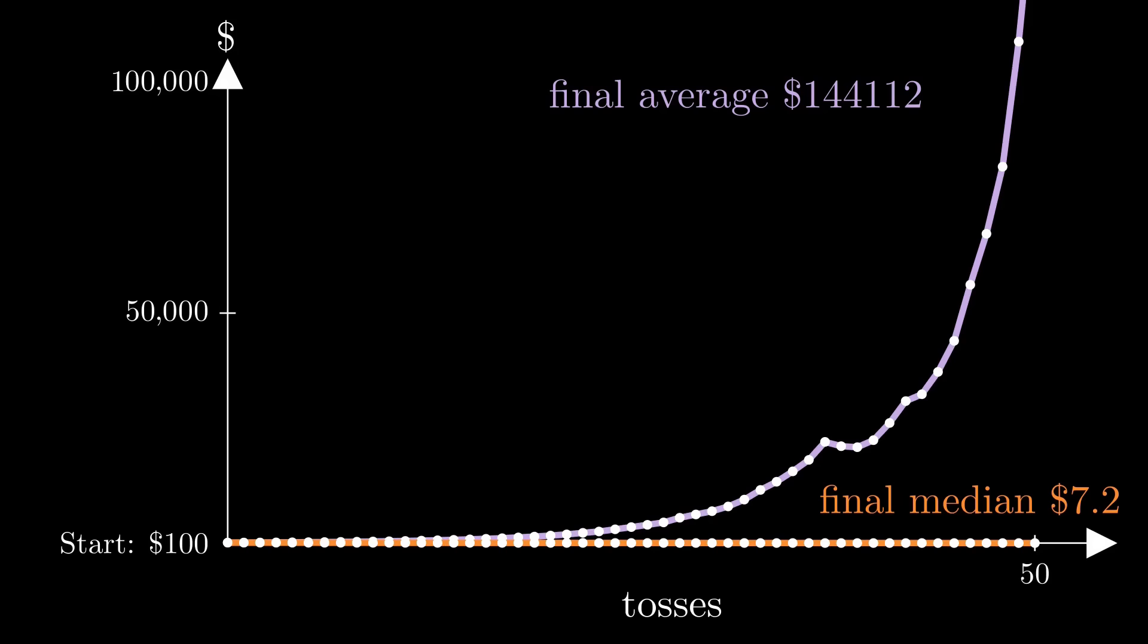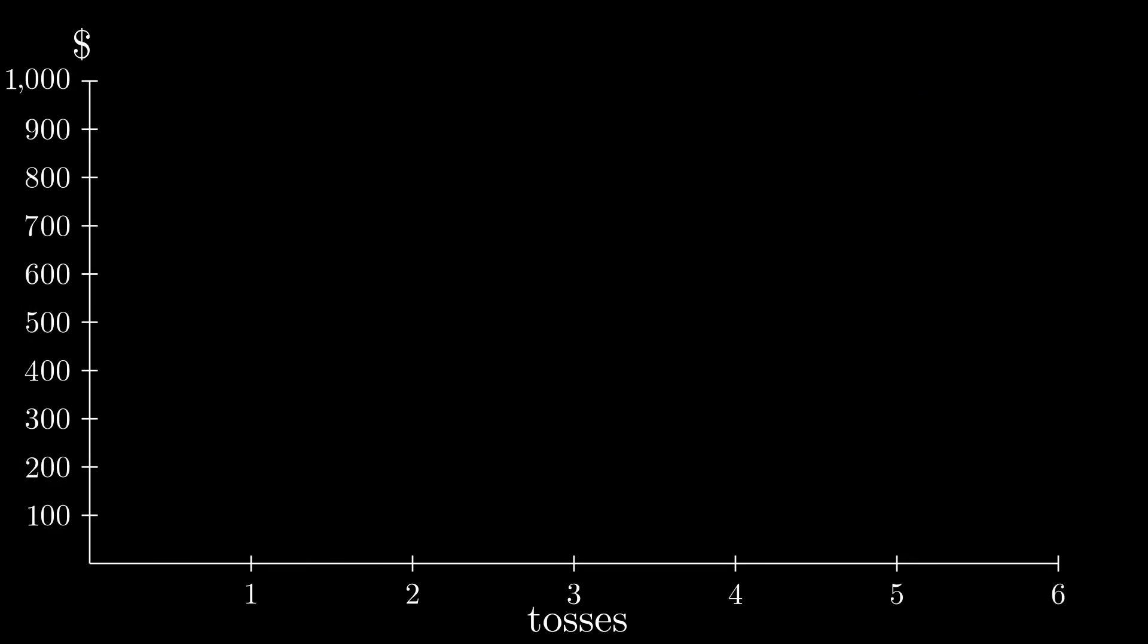This is called a non-ergodic system because the population average is different from the median outcome of individuals. But how is the median this low? Let's visualize the problem.